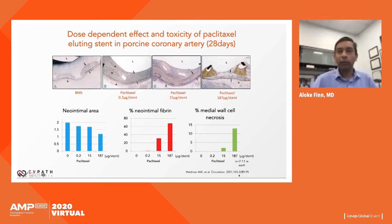In experiments by Heldman in porcine coronary arteries using different doses of paclitaxel on coronary stents, as the dose of paclitaxel was increased, neointimal area went down — showing inhibition of restenosis — but neointimal fibrin and medial wall cell necrosis both went up. These are markers of delayed healing and arterial wall destruction. At high-dose paclitaxel, massive malapposition occurs partly due to the amount of necrosis.